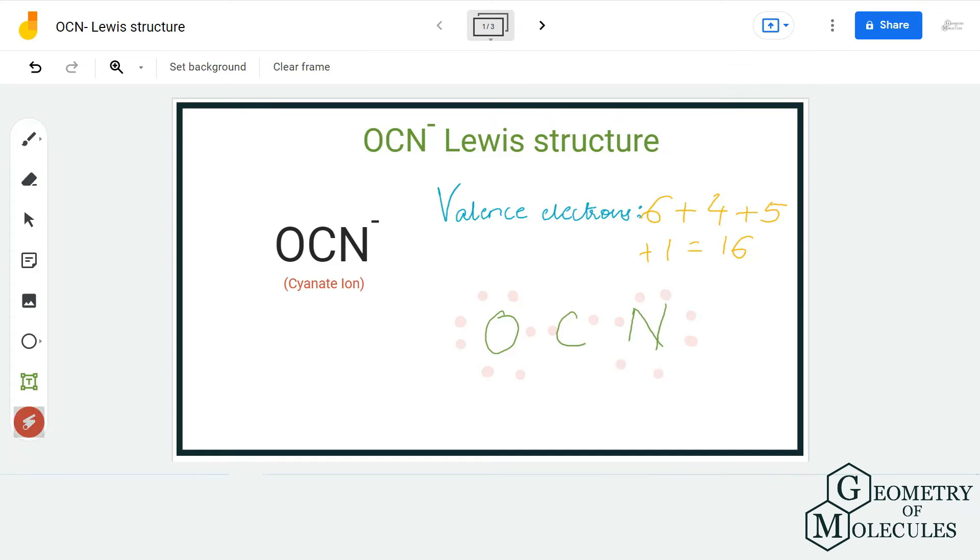Once I have done that, you will see that carbon atom doesn't have a complete octet as it just has 4 valence electrons in its outer shell. In times like this, we try to offer a structure in which all the atoms have complete octets, and that is possible by shifting a pair of electrons.